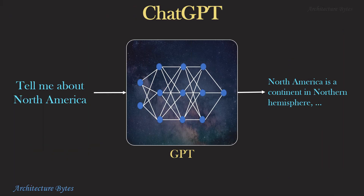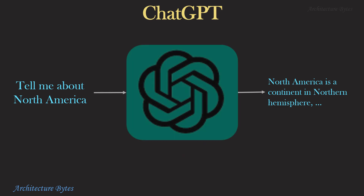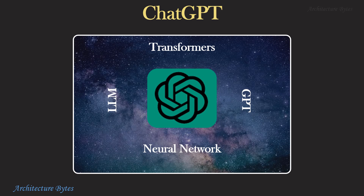ChatGPT is based on OpenAI's GPT model. GPT-3.5 has 96 layers of neural network, making it one of the largest deep learning models ever created. It was trained on a large chunk of internet data, with the model trained on hundreds of billions of words. This is how ChatGPT is able to generate a response that is indistinguishable from a human response. To summarize: ChatGPT is built using GPT, and GPT is a type of large language model that uses a neural network architecture called Transformers.